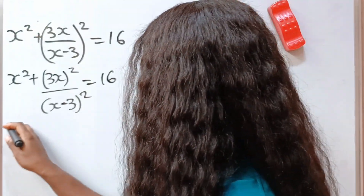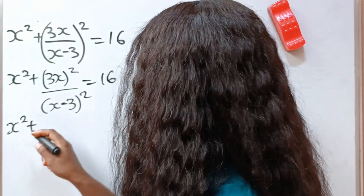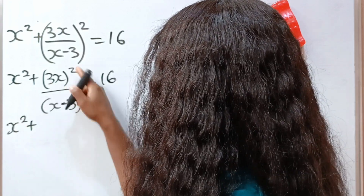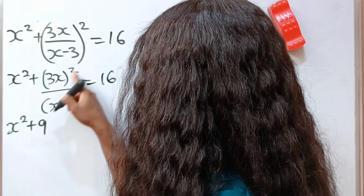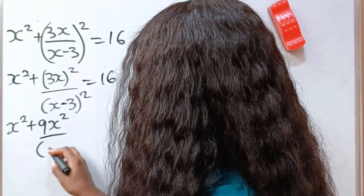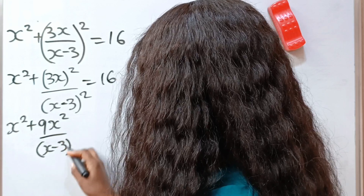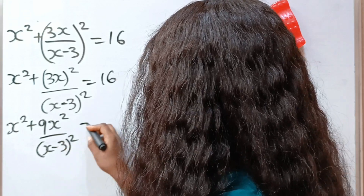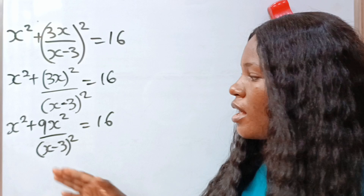So we have x to the power of 2 plus 3 squared — which gives us 9 — and x squared gives us x squared, divided by x minus 3 squared, is equal to 16.